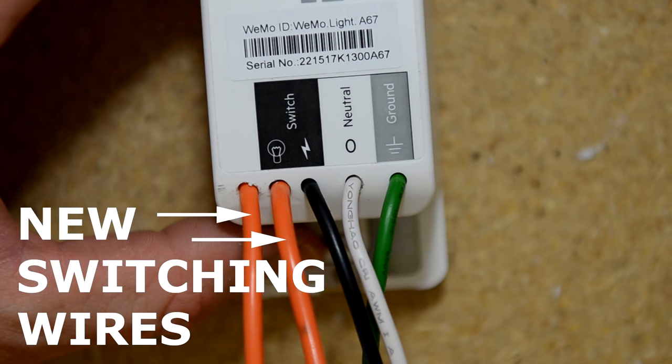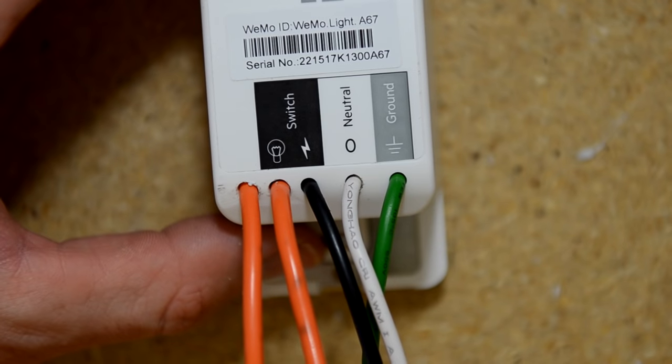Now it's complete. Since it's just a relay that's doing the switching, you can switch either AC or DC voltage. Just keep it under 15 amps.